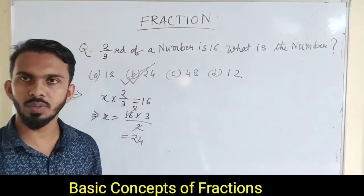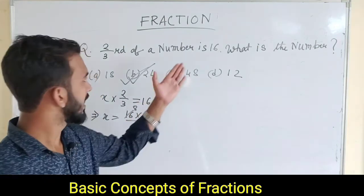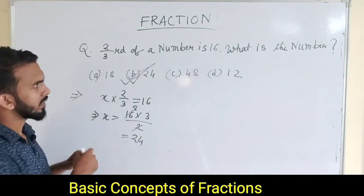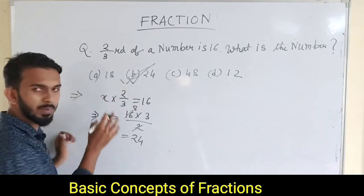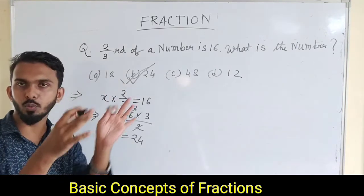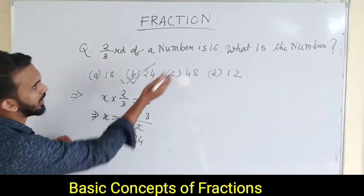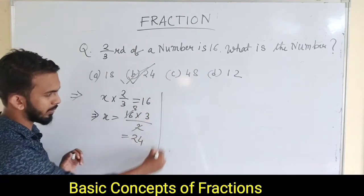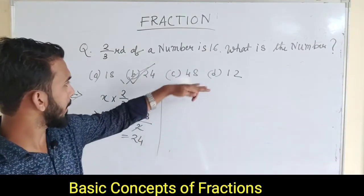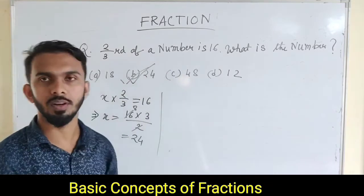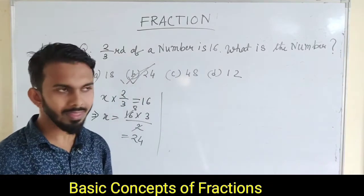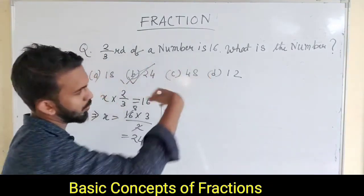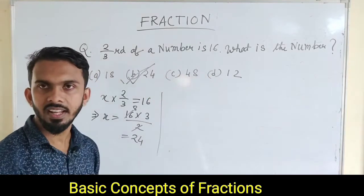This is the question: 2 thirds of a number is 16, then what is the number? So x does not have a number — it has 2 thirds. That means 2 by 3 into x equals 16. So we will follow this method. Now let's look at the answer. If we have 2 thirds of a number equal to 16, then what is the number?